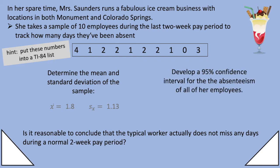Then develop a 95% confidence interval for the absenteeism of all her employees. Plug all that into your calculator like I showed you before. We'll get a confidence interval of 0.988 up to 2.612.